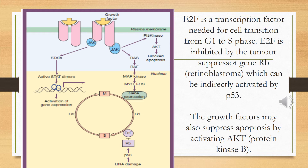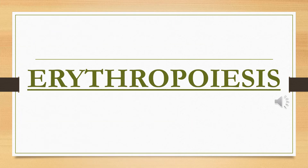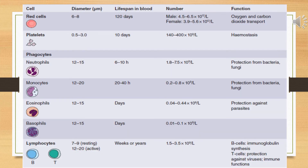Another topic is erythropoiesis — the formation of red blood cells. RBCs have a limited lifespan of usually around 120 days. In the table you can briefly observe some important values and diameters of cells.